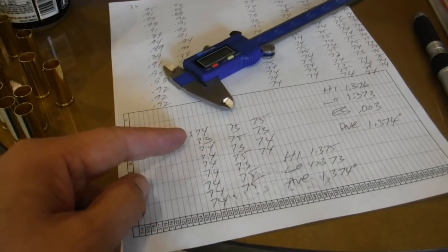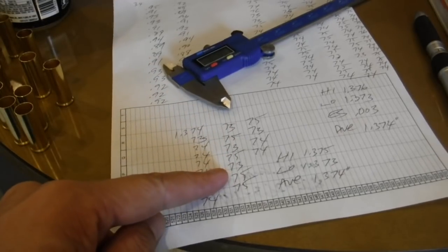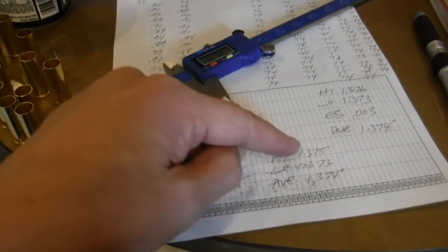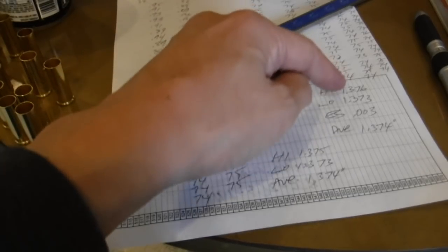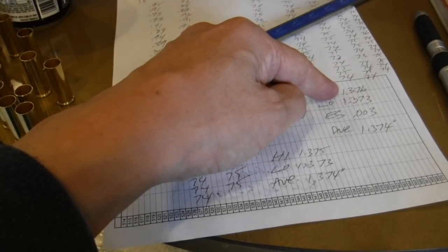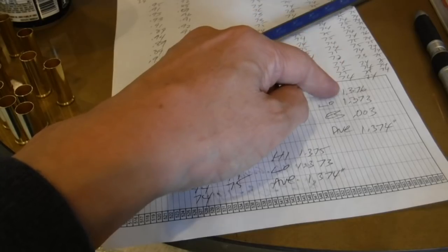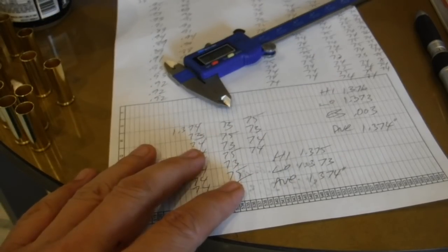Now, again, taking 20 random cases, you get a high of 1.375, so it did not identify the 1.376, but that's because, random pick, you missed the 1.376 on the end,